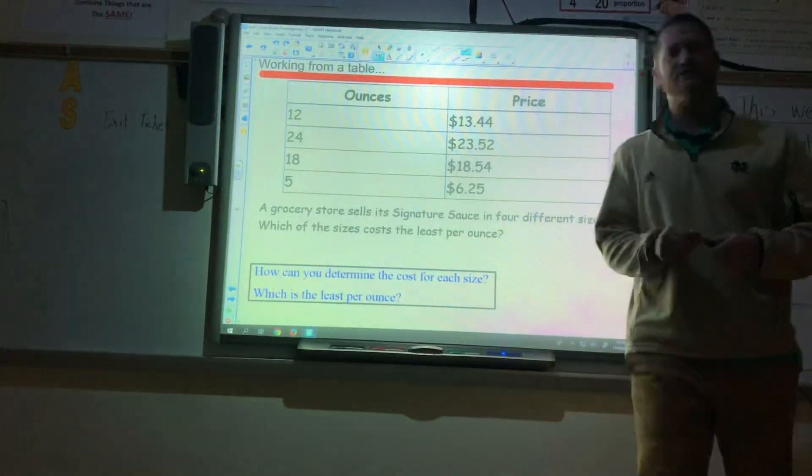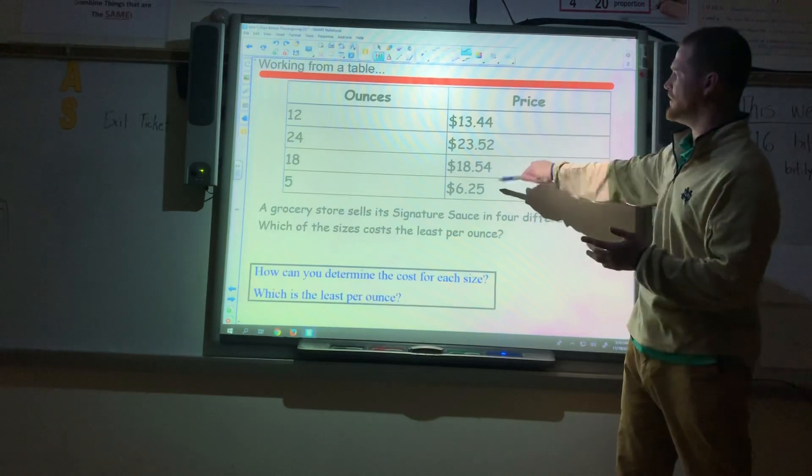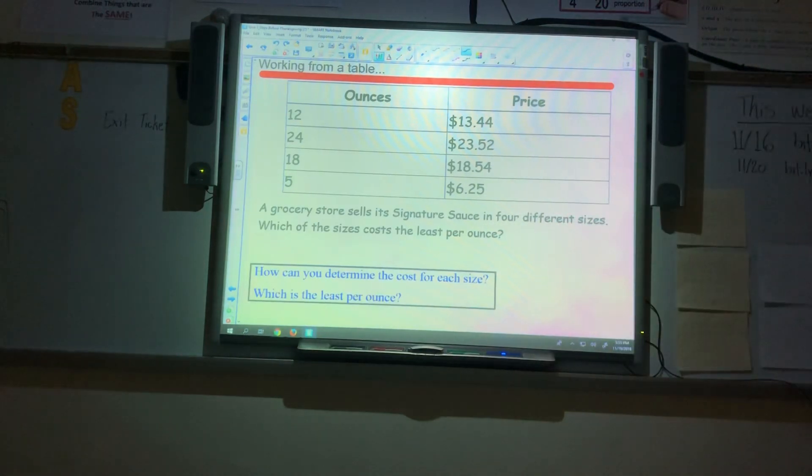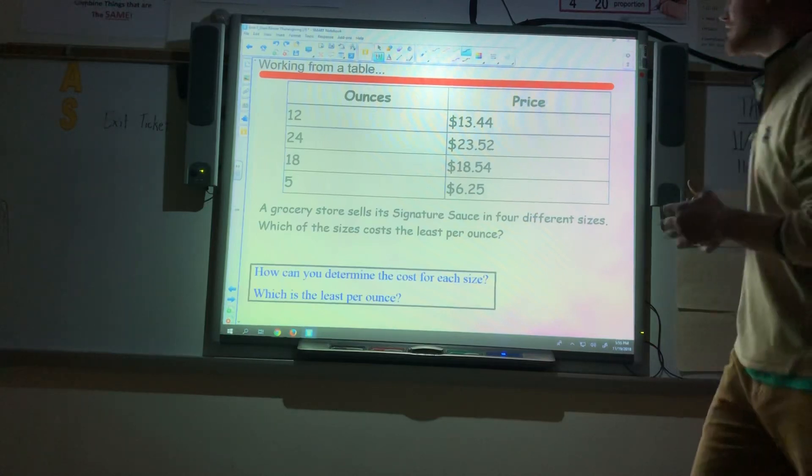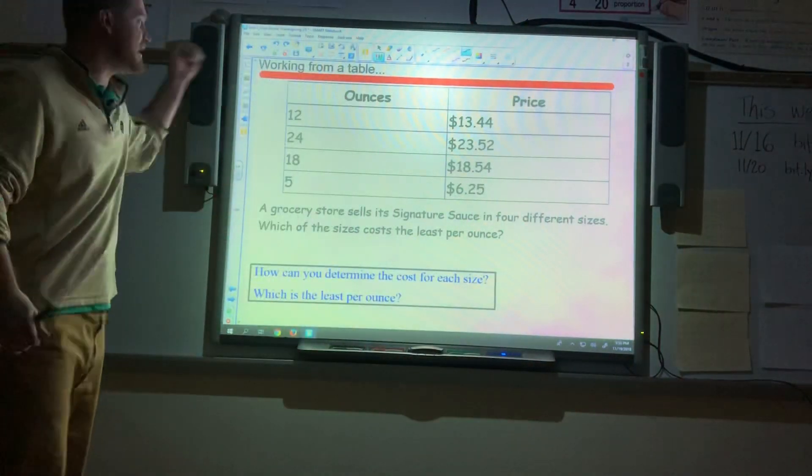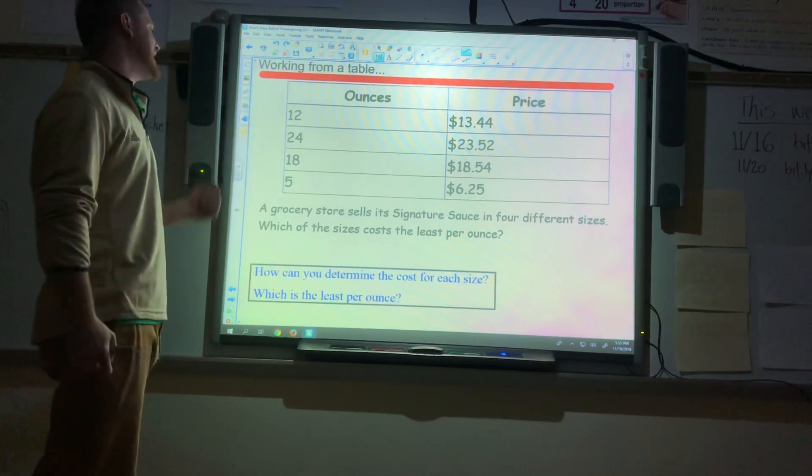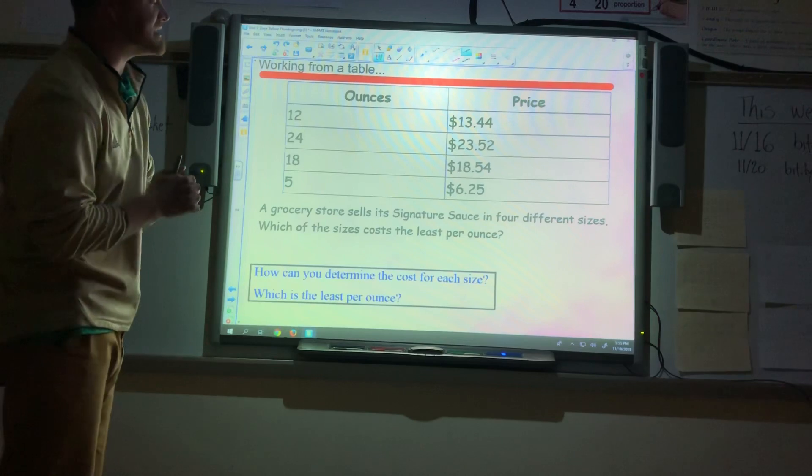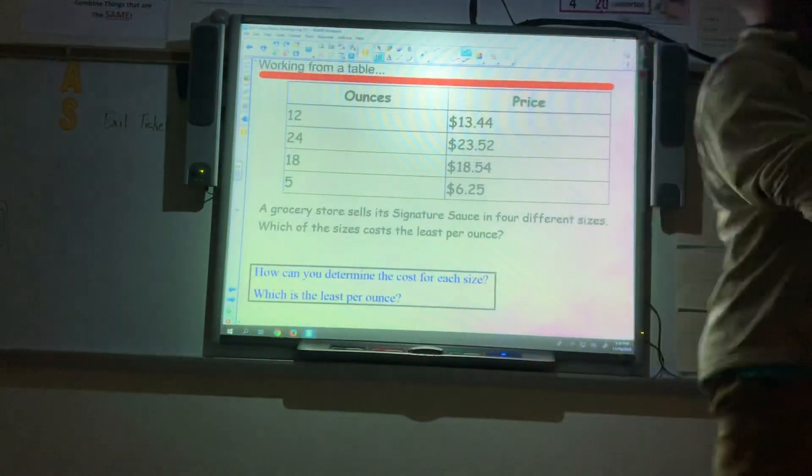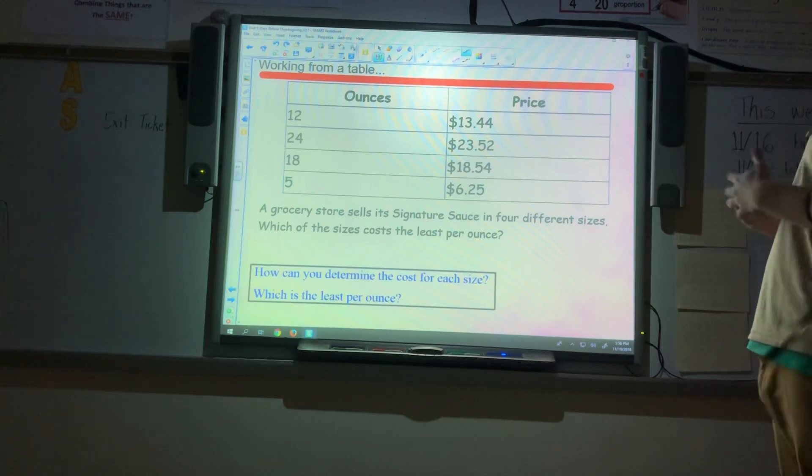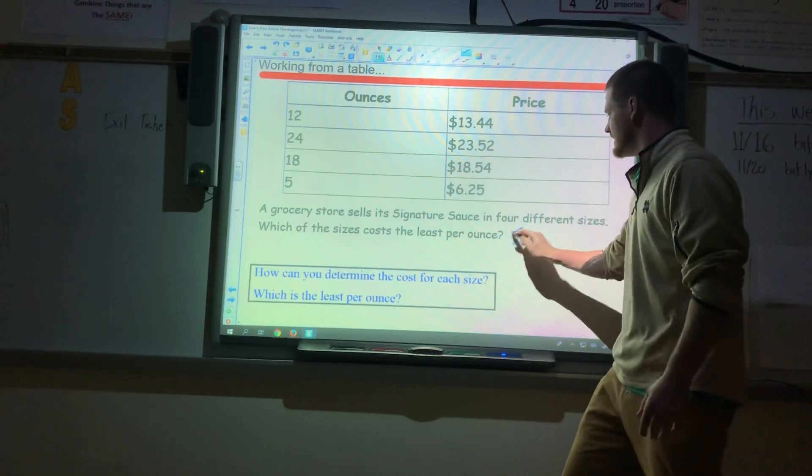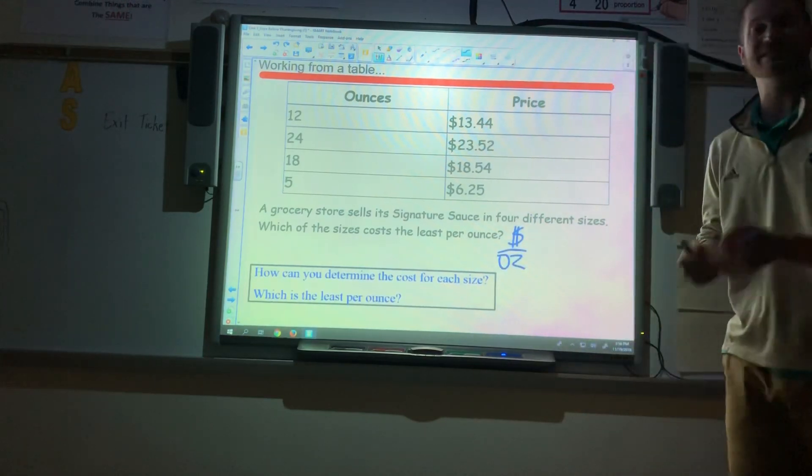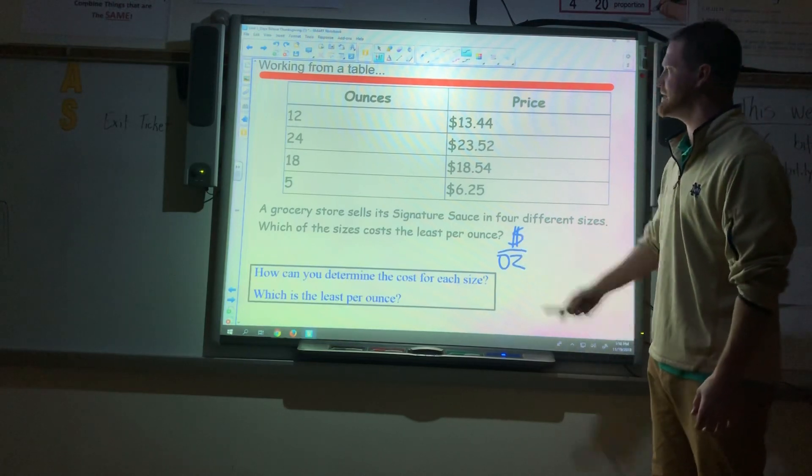Now, hopefully before you watch the video, you took the notes down a couple windows ago and you are filling in those two missing numbers. So I'll give you a chance to go ahead and do that real quick. While you write it down, you go ahead and listen. This is a grocery store that's selling its signature sauce in four different sizes. We have the 12 ounce can, the 24 ounce artisan bottle, the 18 ounce there, and the 5 ounce there. Which of the sizes are going to cost the least per ounce? So if we were having to buy a lot of these, what would be the cheapest in the long run? Well, we know when we set this up, it's going to be money over everything. In this case, money, dollar amount over ounces.